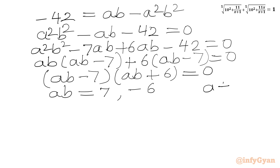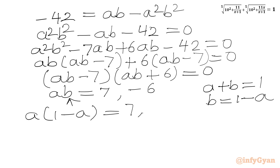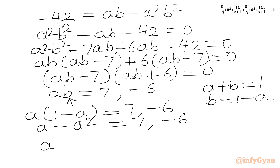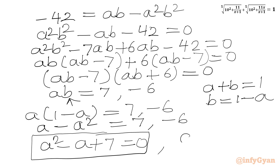From equation 1, a + b = 1, so b = 1 - a. Substituting into ab = 7 and ab = -6: a(1-a) = 7 gives a - a² = 7, or a² - a + 7 = 0 (first quadratic). And a(1-a) = -6 gives a - a² = -6, or a² - a - 6 = 0 (second quadratic).